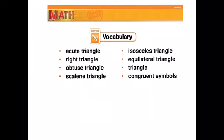So vocabulary. Some of these you've heard before. An acute triangle, a right triangle, and an isosceles triangle. Equilateral, obtuse, scalene, and then a triangle in general. So we know what a triangle is.